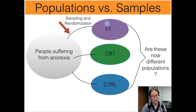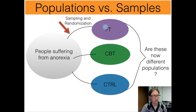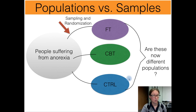Then we're applying a treatment — that's our explanatory variable, the type of therapy that people get. And then, statistically, what we're going to be asking is: are these groups that we've created now reflective of individuals in different populations? That's what we're doing with the statistical test.